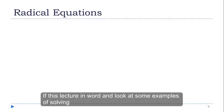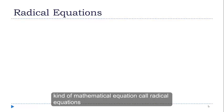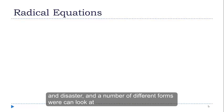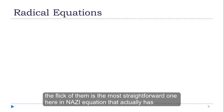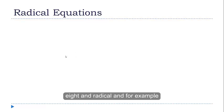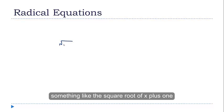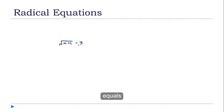In this lecture, we're going to look at some examples of solving a kind of mathematical equation called a radical equation. These actually come in a number of different forms, so we're going to look at what's really the most straightforward one here, and that's an equation that actually has a literal radical in it. For example, something like the square root of x plus 1 equals 3.